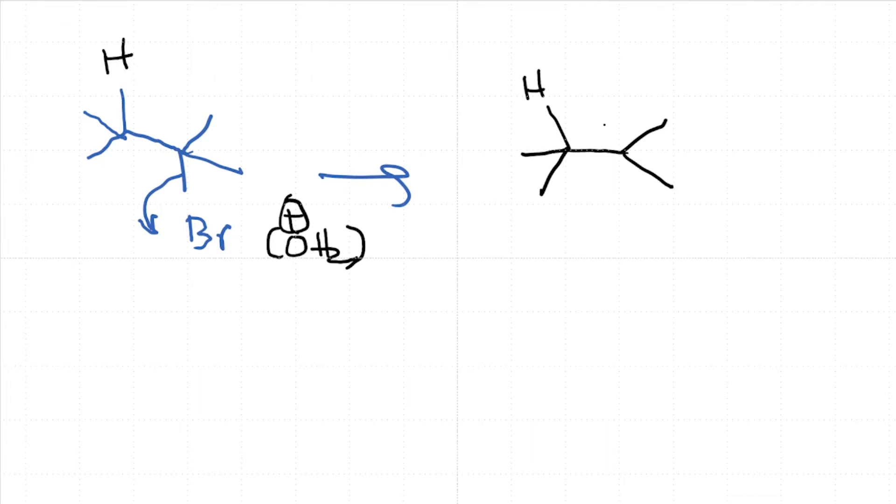Once this carbocation is formed, multiple things can happen including substitution. But one possibility is that this can lose a proton, and this proton loss can be facilitated by a weak base, giving you the eliminated product. This mechanism is referred to as E1.